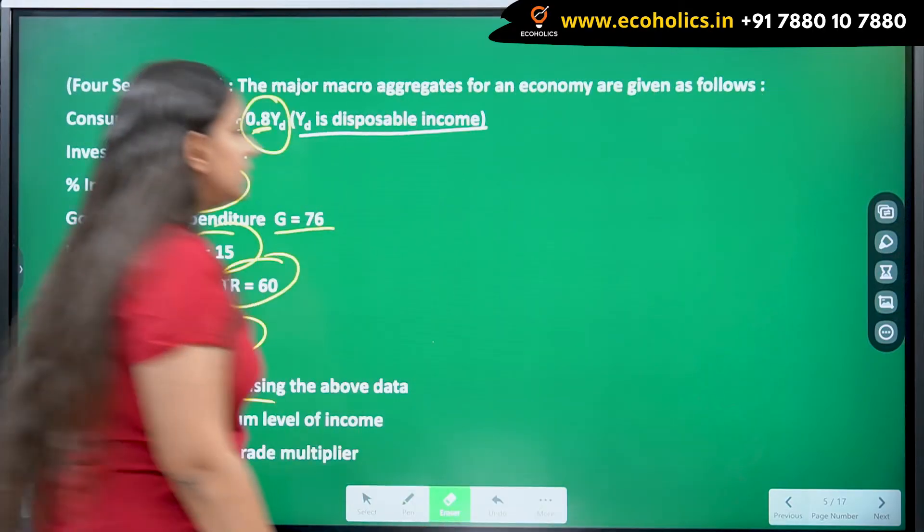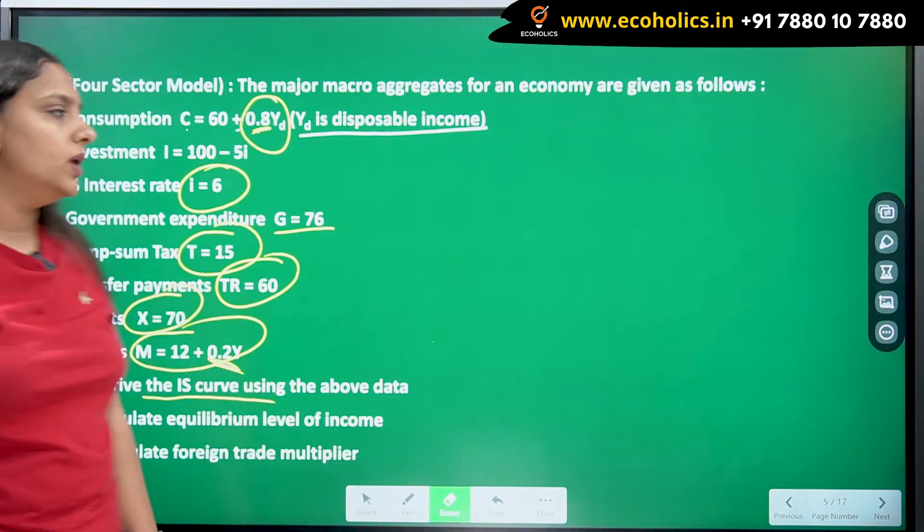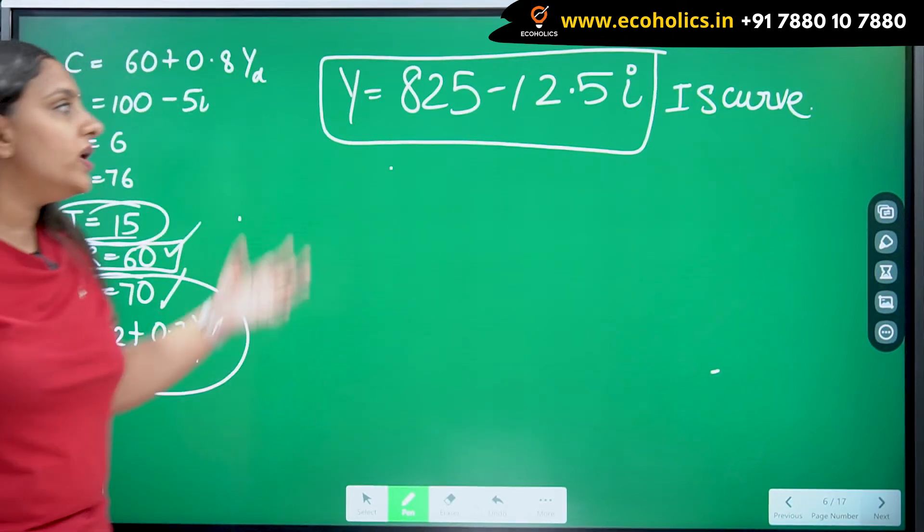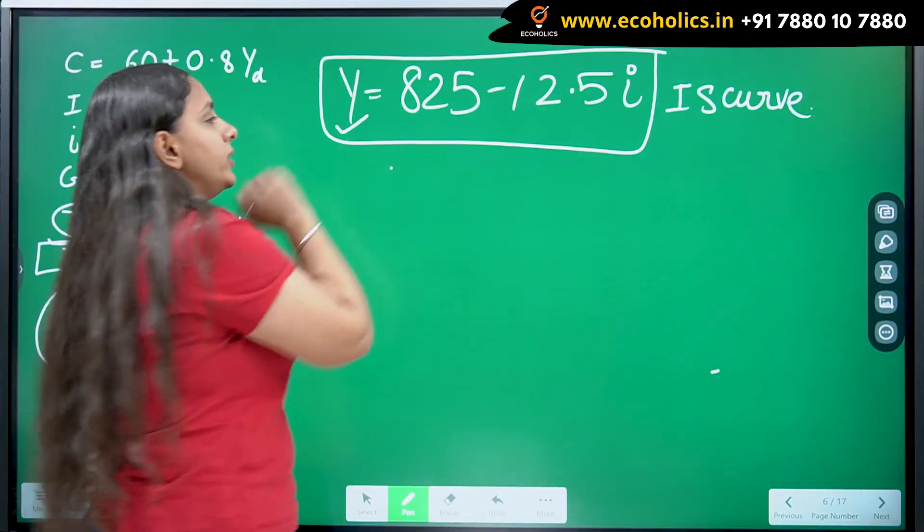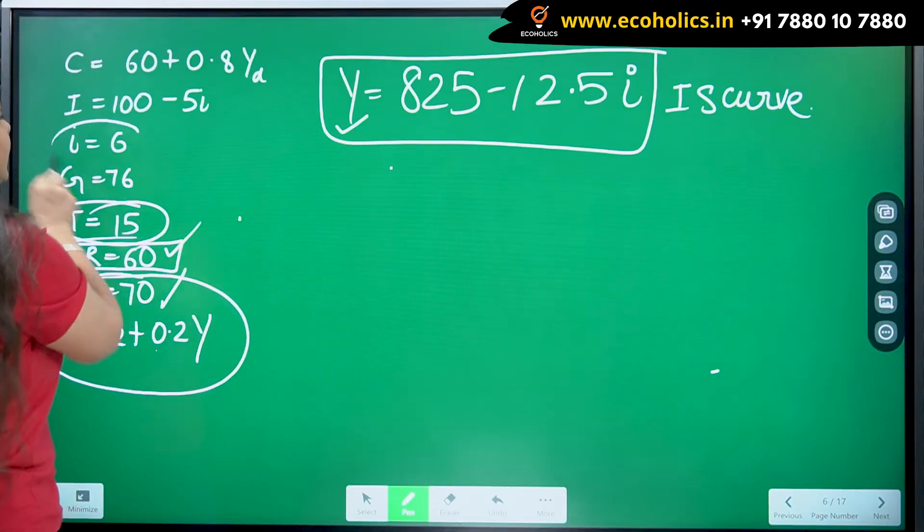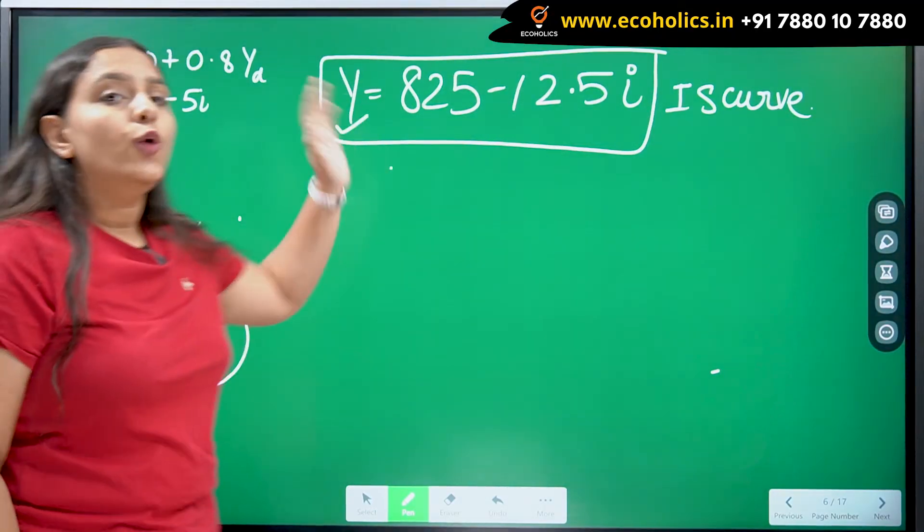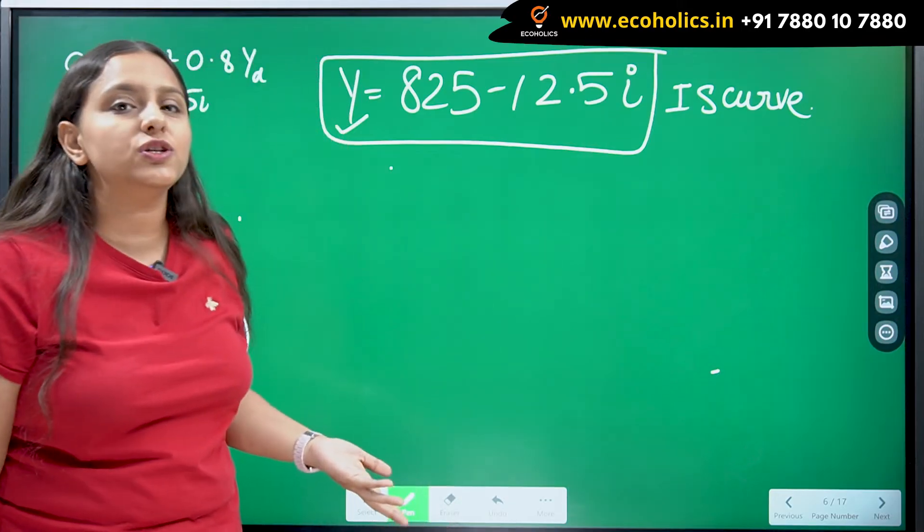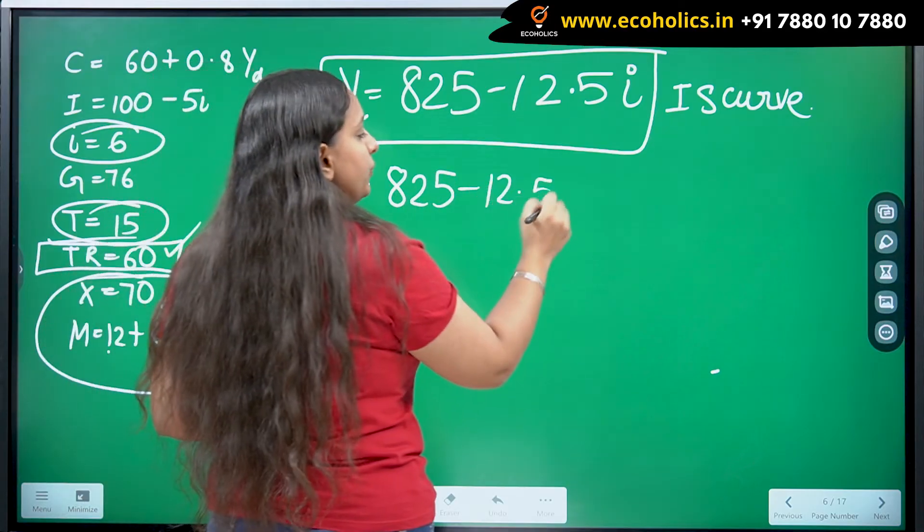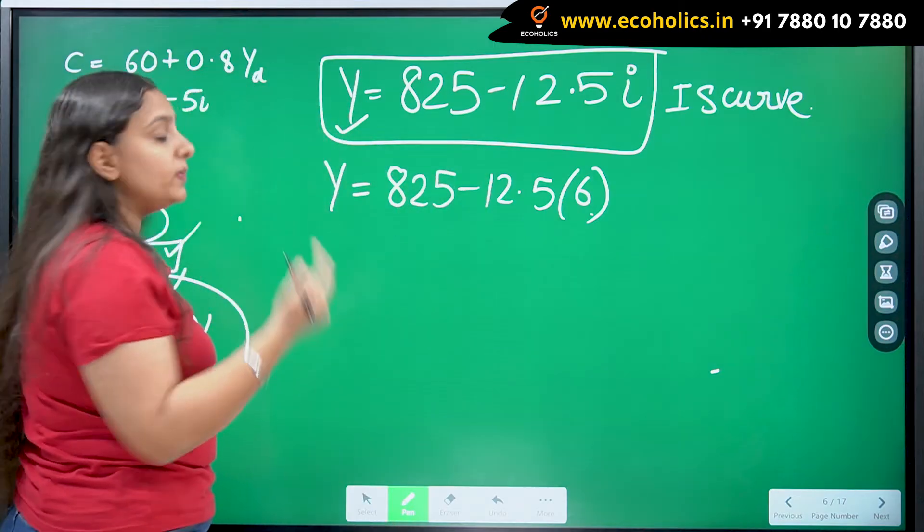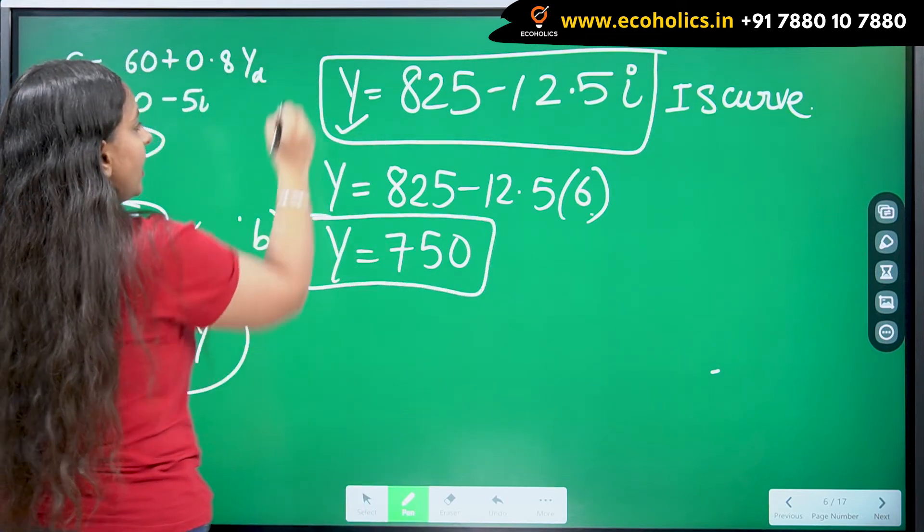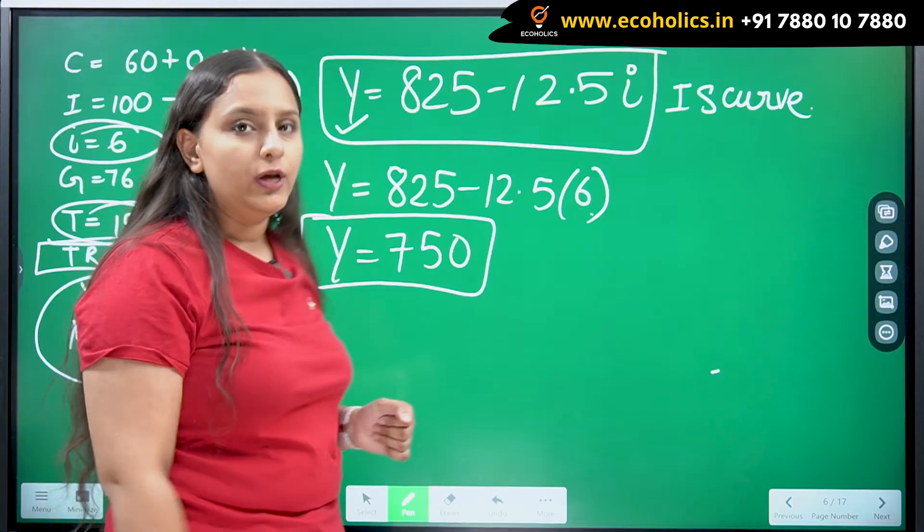The next part demands us to find the value of equilibrium level of income. Equilibrium level of income, they are not even talking about the LM curve. We have to find equilibrium level of income from this portion only. How are we going to get it? If you remember, I told you one thing in the start of this video that we are given with interest rate, but we don't have to substitute it when we are finding the equation of IS. But you can substitute it now. I will be just putting the value of i over here and I will be getting Y equal to 750 after solving this. This is the answer to part B where I have solved for the value of equilibrium level of output.